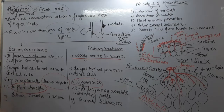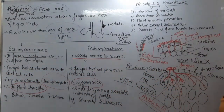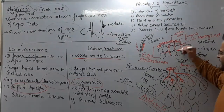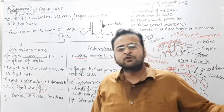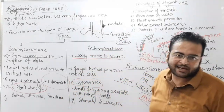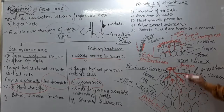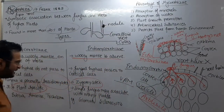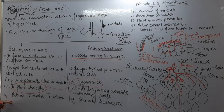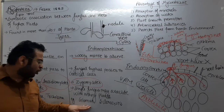Ectomycorrhiza mein fungus plant-specific hoti hai — yani ek hi type ki fungus ek hi type ke plant se contact karegi. Endomycorrhiza ke case mein ek hi type ki fungus kayi type ke plants se jur sakti hai, so it is not plant-specific. Ectomycorrhiza mein examples hain: Boletus, Amanita, Tricholoma. Aur endomycorrhiza banayegi fungus Glomus and Sclerocystis.